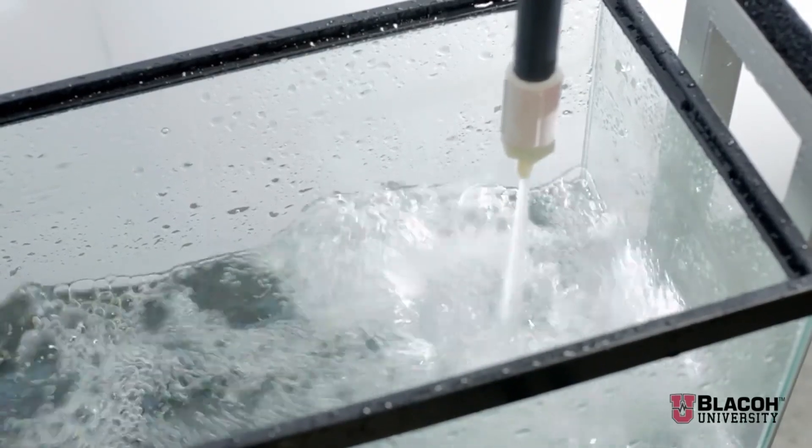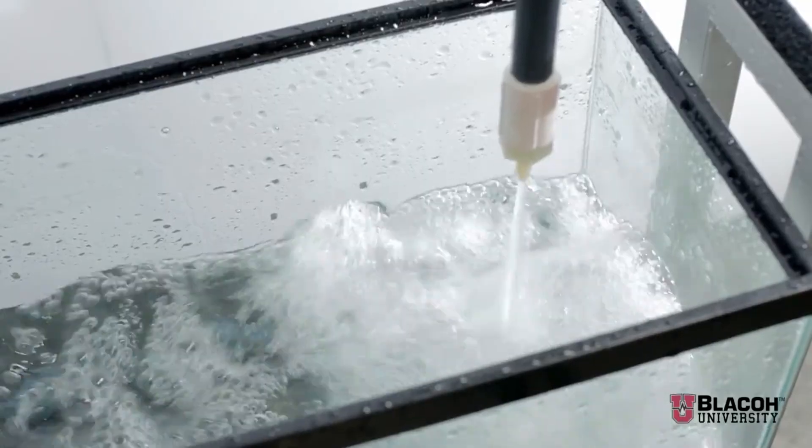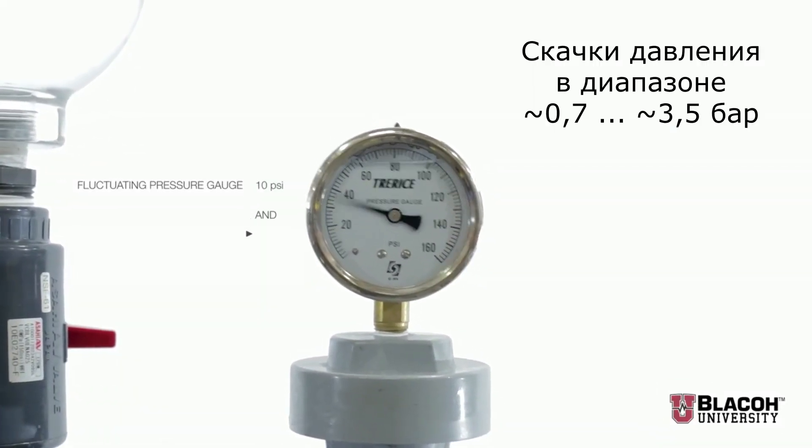That start and stop action can be observed in the system pressure gauge, which is fluctuating between 10 and 50 psi.